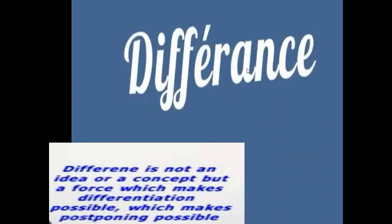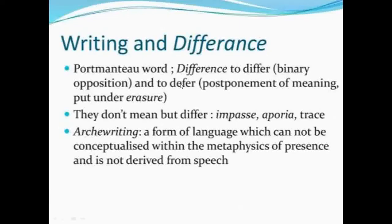Différance — even though it is written with an A, it is pronounced as 'différance'. It is a portmanteau word — it carries two meanings inside, made of two words. One word would be 'differ' (D-I-F-F-E-R) and another word would be 'defer'. So différance combines: to differ — binary opposition — and to defer — postponement of meaning — and put under erasure.